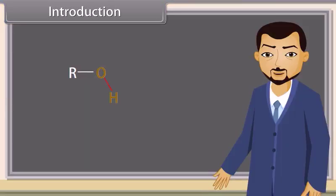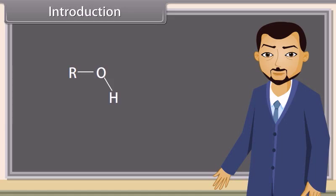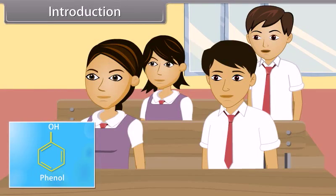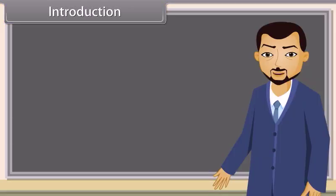The hydroxyl group is a functional group consisting of a hydrogen atom covalently bonded to an oxygen atom. Can anybody tell me what is phenol? Yes, teacher. Phenol is an organic compound where one hydrogen attached to a benzene ring is replaced by a hydroxyl group. Very good, Sunil. In this lesson we will learn about alcohols, phenols and ethers.